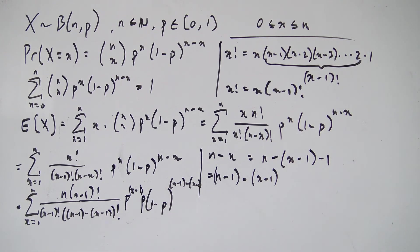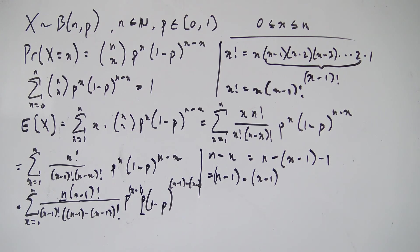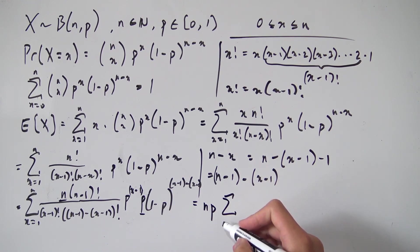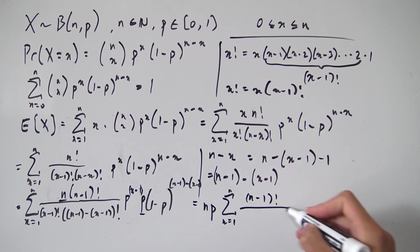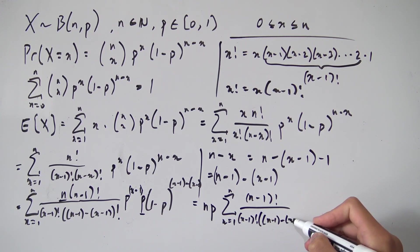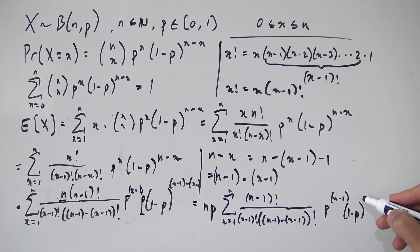Now let's clean things up. Since our sum is with respect to X, anything not involving X can be pulled outside the sum as a constant. We throw N and P outside, giving us N times P times the sum from X equals 1 to N of N minus 1 factorial over X minus 1 factorial times N minus 1 minus X minus 1 factorial, times P to the X minus 1 times 1 minus P to the N minus 1 minus X minus 1.